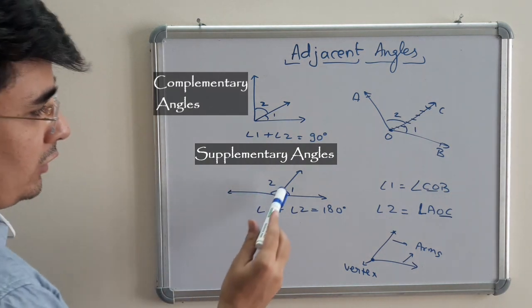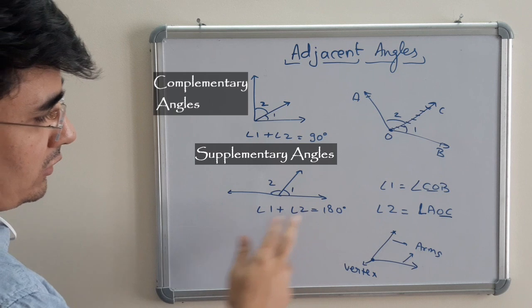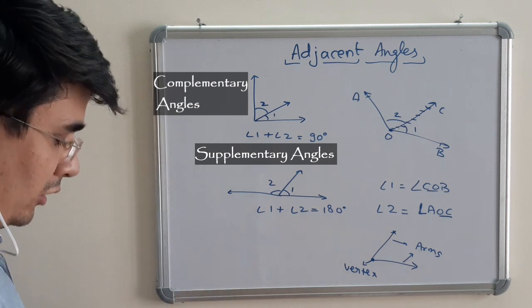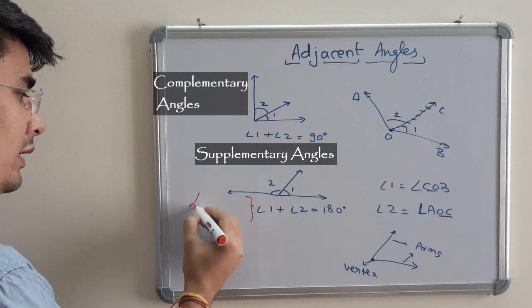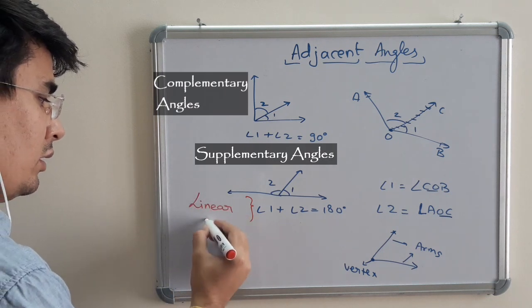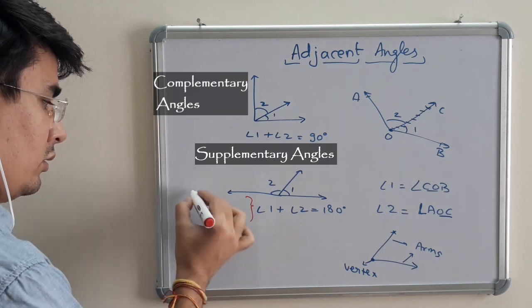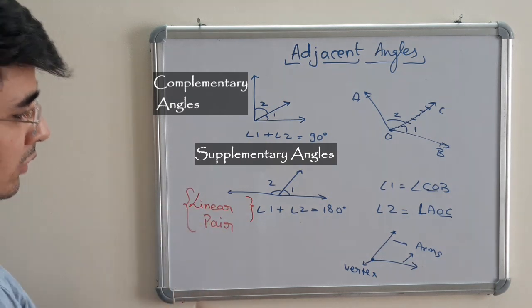One more thing, when two angles joined together, angle 1 plus angle 2, we call it supplementary. And the most famous is linear pair. This thing is very important, but pair is only for two angles.